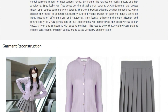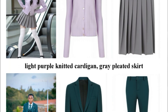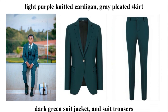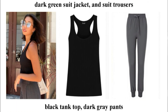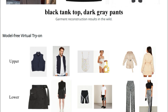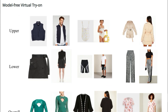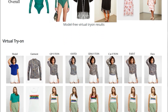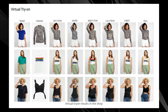It proposes Any to Any Tryon, a method that can generate tryon results based on different textual instructions and model garment images. What makes this paper unique is that it doesn't rely on masks or poses, and it uses adaptive position embeddings, making it much more versatile. The core idea is to use adaptive position embeddings that enable the model to generate outfitted model images or garment images based on different input image sizes and categories, greatly enhancing both generalization and control. The paper also introduces the LAION Garment Dataset, the largest open-source dataset for garment tryon. This method allows for flexible and controllable virtual tryon generation in various scenarios, whether trying on outfits in a shop or reconstructing a garment, demonstrating flexible, controllable, and high-quality image-based virtual tryon generation.